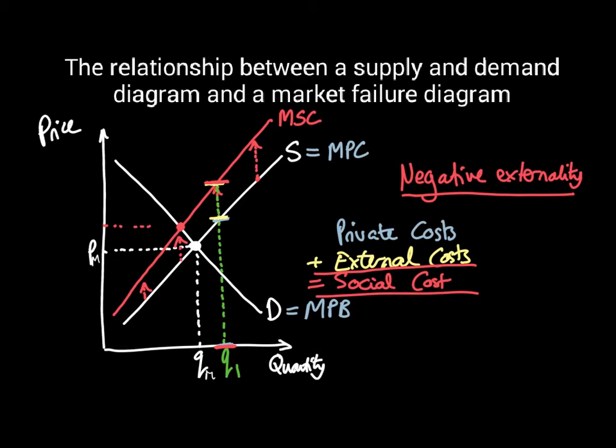In this situation, the market is producing the wrong amount of this product. It's not producing the allocatively efficient amount. The market is producing at QM because QM is where we end up when we take account of the firm's costs and the consumer's benefit. But really, we should be at Q star. If the firm was taking account of all of its costs rather than just the ones it has to bear itself, it would only be producing Q star.